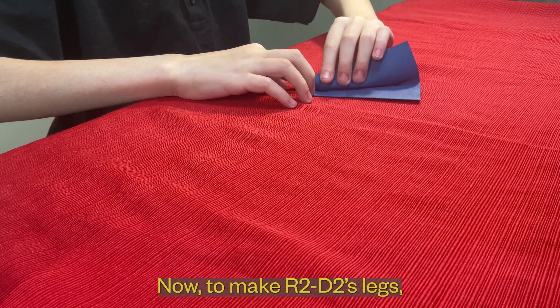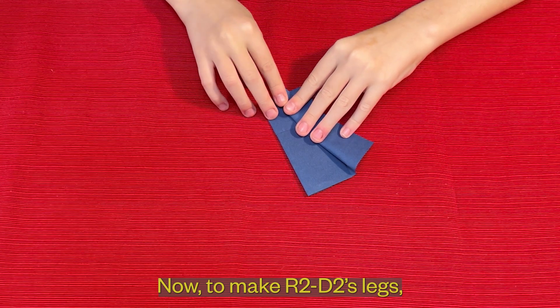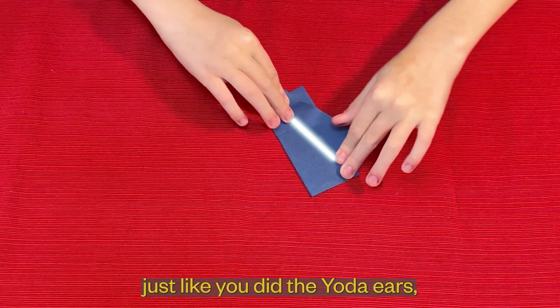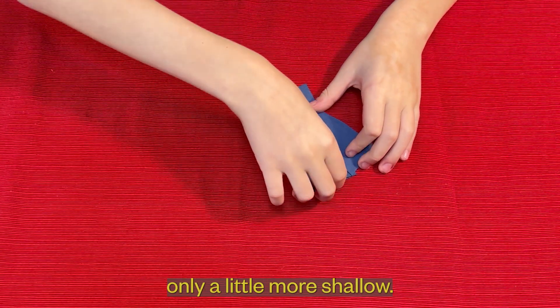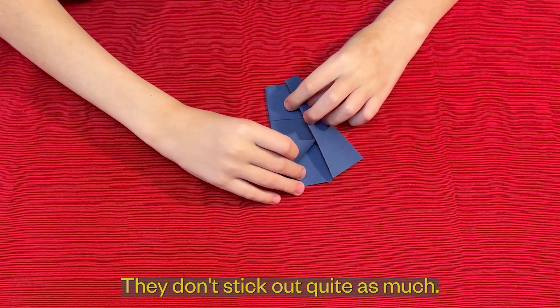Now to make R2-D2's legs, fold the paper just like you did the Yoda ears, only a little more shallow. They don't stick out quite as much.